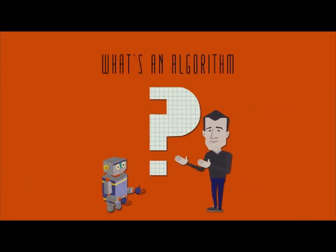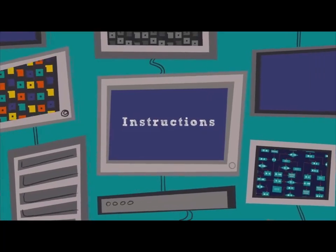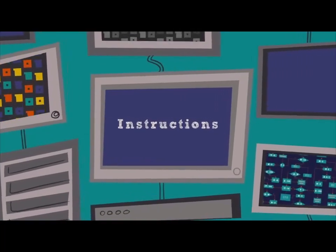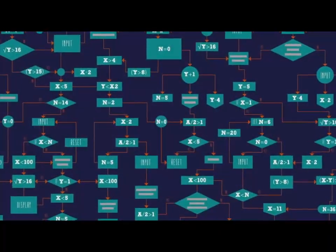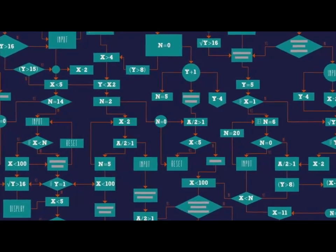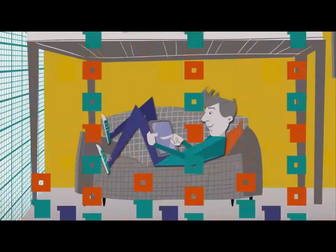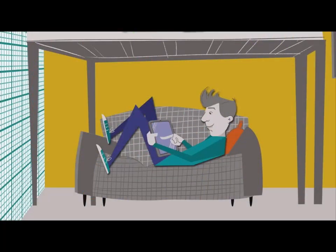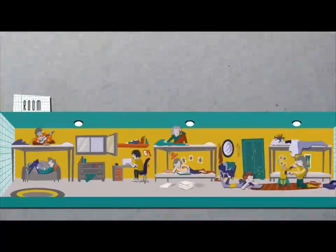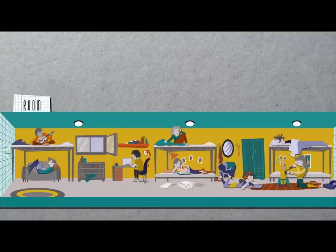What's an algorithm? In computer science, an algorithm is a set of instructions for solving some problem, step by step. Typically, algorithms are executed by computers, but we humans have algorithms as well. For instance, how would you go about counting the number of people in a room?